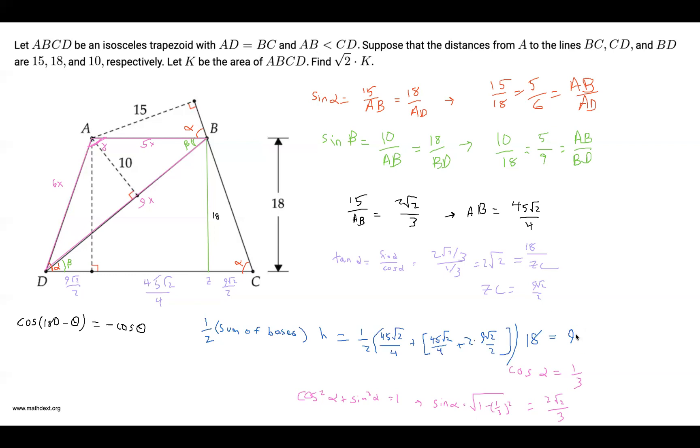and we can also factor out a root 2 times 45 over 4 plus 45 over 4 plus 9. So that's 45 over 2 plus 9, which is 63 over 2. And this is going to be equal to our K, the area of our trapezoid. So square root of 2 times K